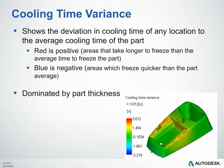The Cooling Time Variance plot shows the deviation in cooling time of any location on the part relative to the average cooling time. Red areas are positive — these areas typically take longer to freeze than average. Blue areas are negative — these areas freeze quicker than the part's average. This is mainly dominated by part thickness.